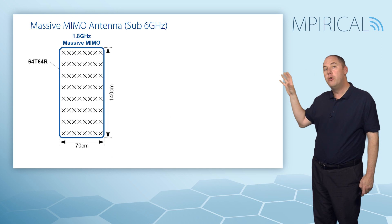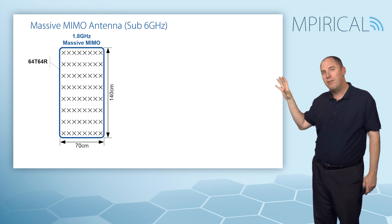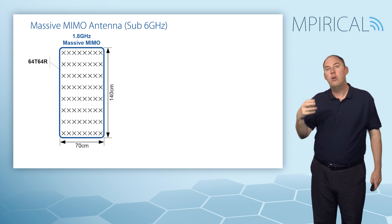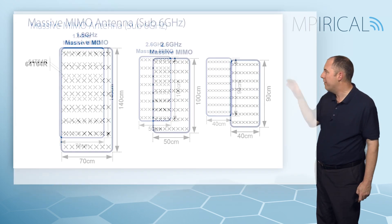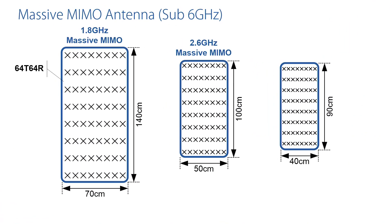You can also use this array for lower sub-6 gigahertz bands. What I've tried to illustrate here is, as you increase the frequency, the key concept is the wavelength will reduce. The spacing and the size of the antenna elements will also reduce.